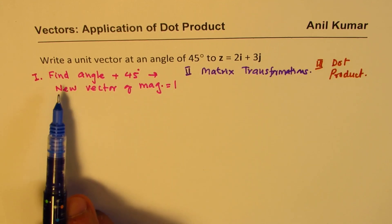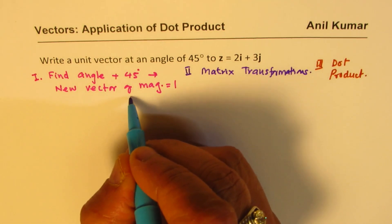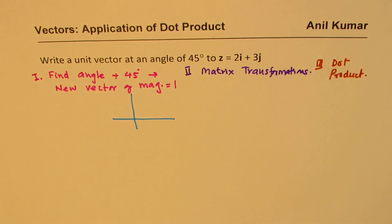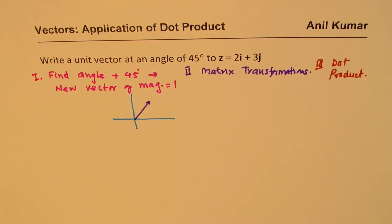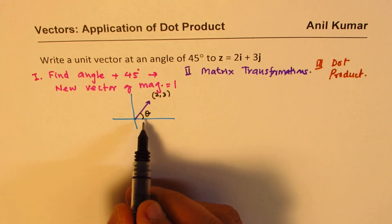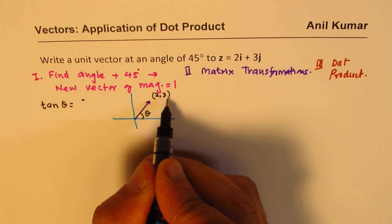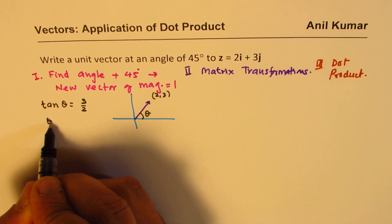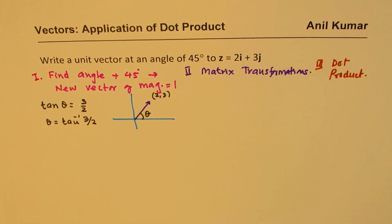Let's understand the simplest method first. We are given a vector, so let me sketch it. The situation is like this: we have vector (2, 3), so the vector points to the coordinate (2, 3). Let's find the angle theta. We know tan(theta) = 3/2.